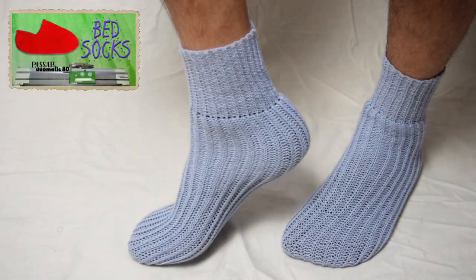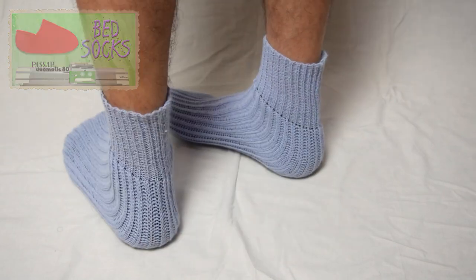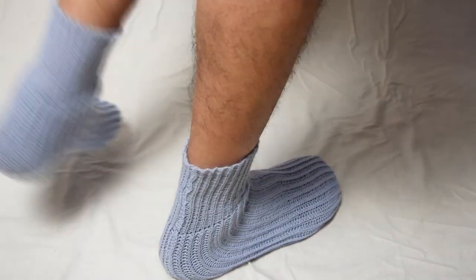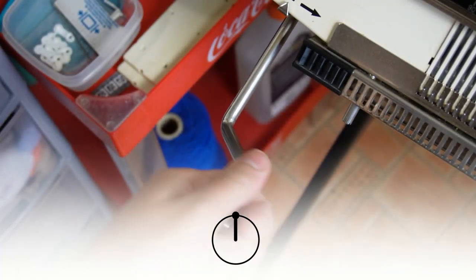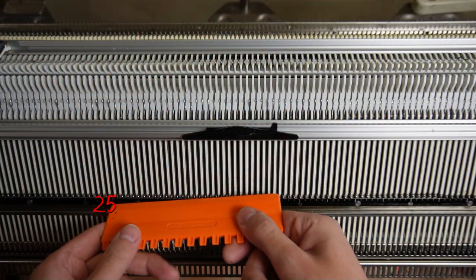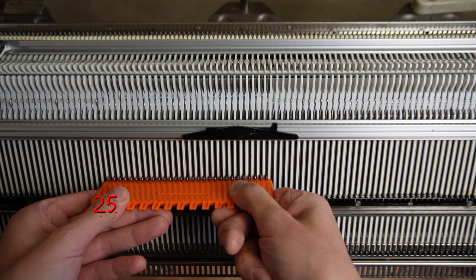Today I will show you how to knit very easy bed socks like the ones I'm wearing right now. Make sure the racking handle is in its highest position. Now raise 50 needles on the front bed.